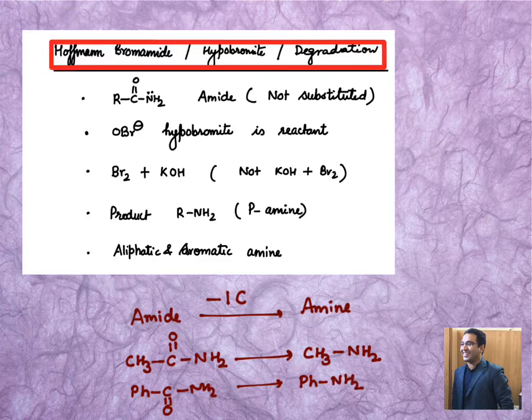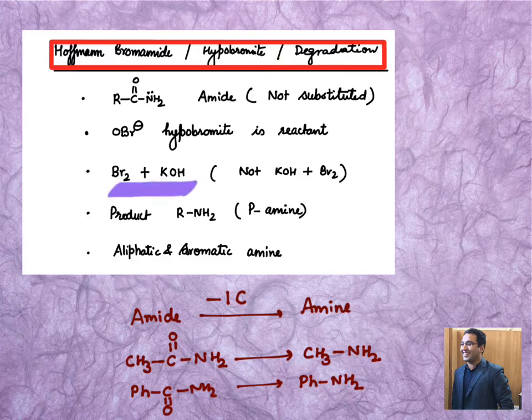So we'll see how this carbon will come out and the reaction has reagents as we have written here: the reagents are bromine and KOH. Whenever bromine and KOH is given, we can remind ourselves with a reaction of OBr minus or OBr3 minus formation, which is a very important reaction in inorganic chemistry.